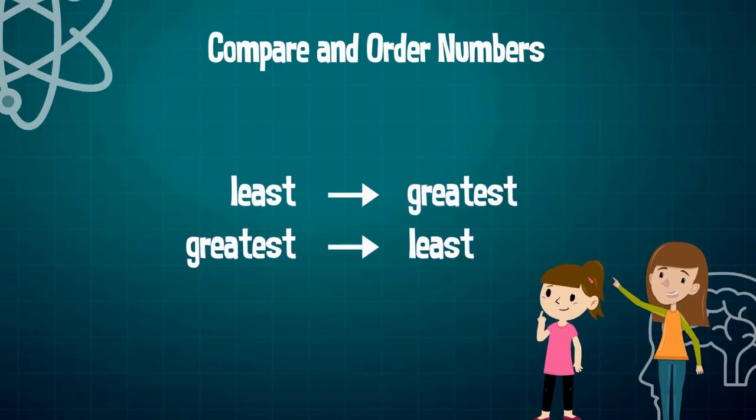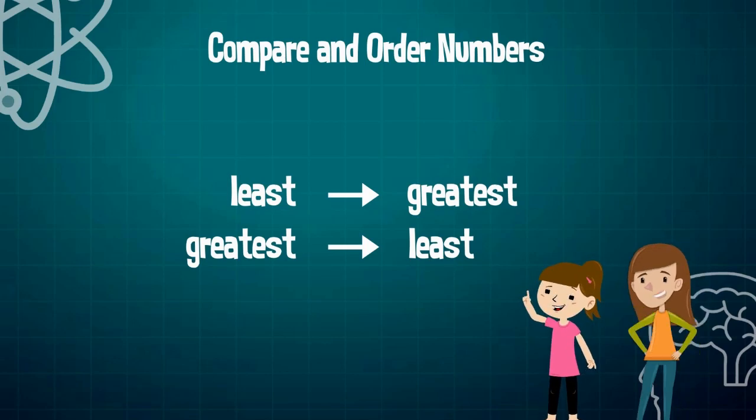Ordering numbers from least to greatest or greatest to least is very similar to comparing numbers. You have to understand the values of each digit within a set of numbers to be able to put them in order. Can you give me an example?